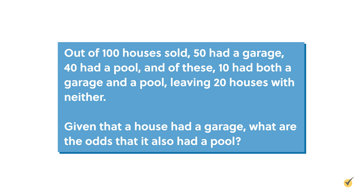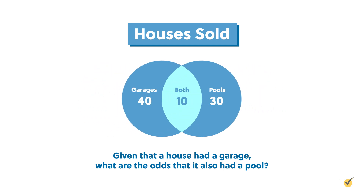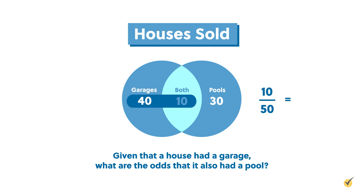If we show it as a Venn diagram, we can make more sense of it. We can now see the overlap between the houses sold with garages and the houses sold with pools, all within the larger set of houses sold. It's easier to see now that of the 50 houses sold with a garage, 10 of them also had a pool. So the odds are 10 over 50, which can be expressed as the fraction 1/5, or 20%.